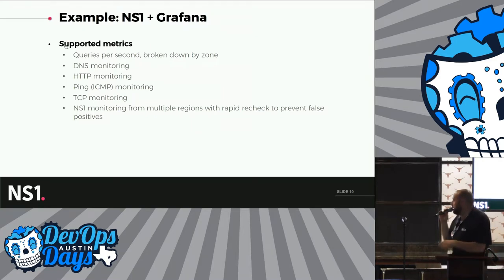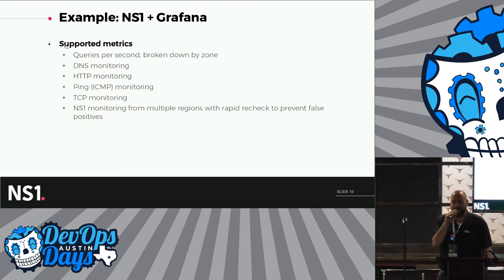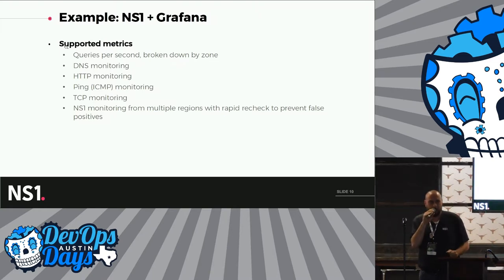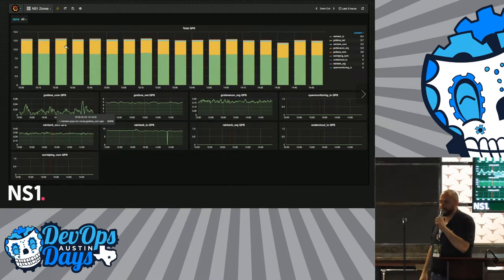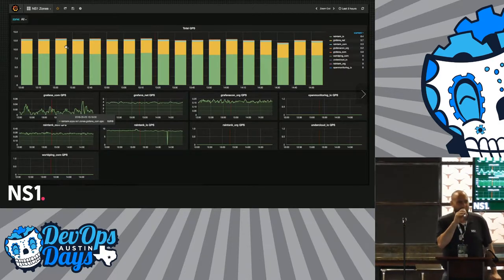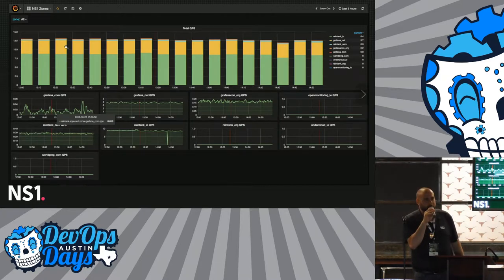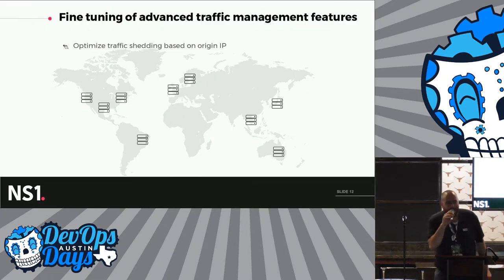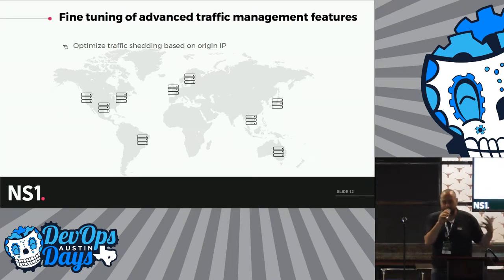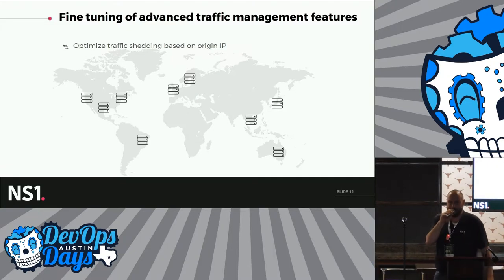We have an integration with Grafana, a tool I'm sure a lot of you use, that can actually provide that information. As part of your overall monitoring and visibility, you can actually see what's going on with your DNS in the same dashboard where you can see what's going on with that brand new Kubernetes cluster you just spun up, or any information pertinent to what you are doing on the course of a normal day. Fine-tuning of queries and traffic management — you want to put your content and services closer to the people that are using them, so use the information coming out of the DNS to do that as well.